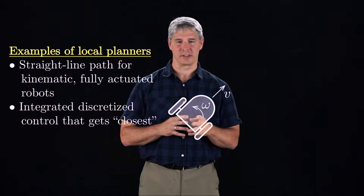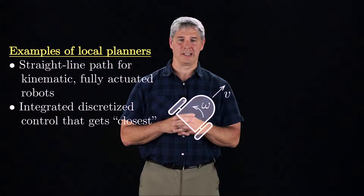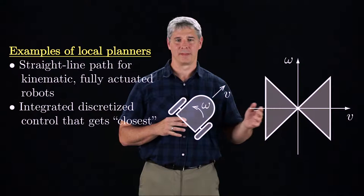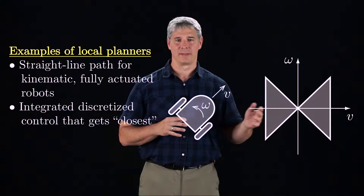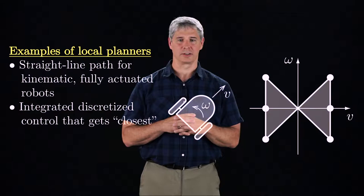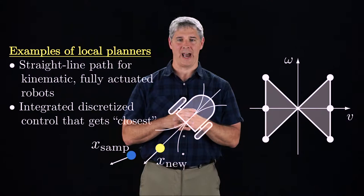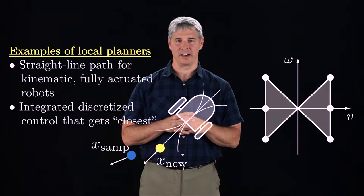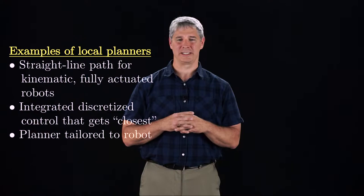For example, a car-like robot has two controls, the linear velocity v and the angular velocity omega. For a car with a bounded linear speed and a bounded turning radius, the bounds on the controls look like this bow tie. We can discretize this control set as six velocities, including forward motion, backward motion, and turns at the tightest turning radius. The integrals of these controls are shown here. If the sampled state is here, then the closest integrated state is shown here. If this path is collision-free, then x_new will be added to the RRT. This local planner is attractive for its simplicity and generality since it can be applied to any robot.